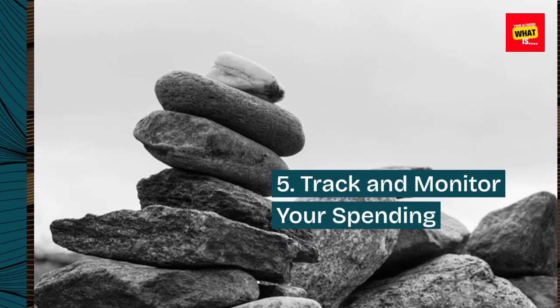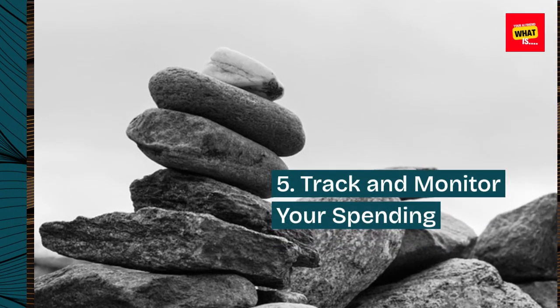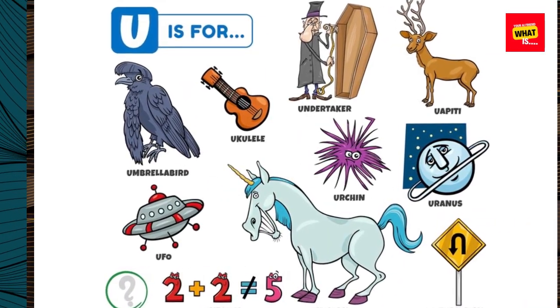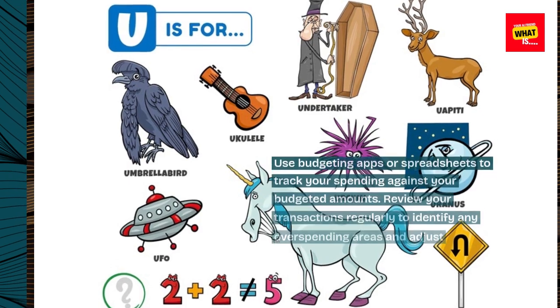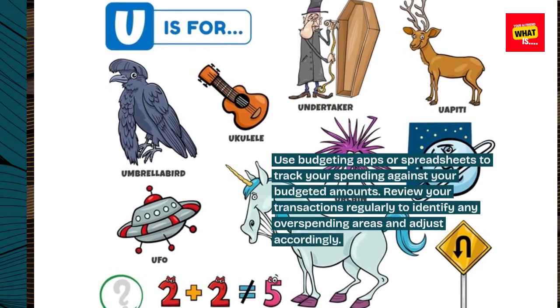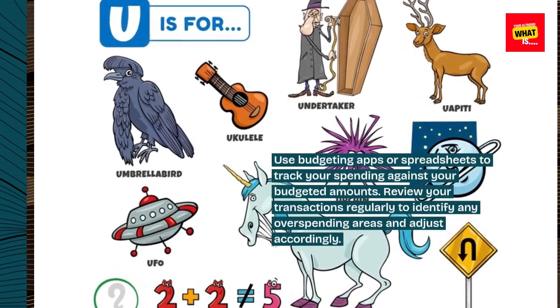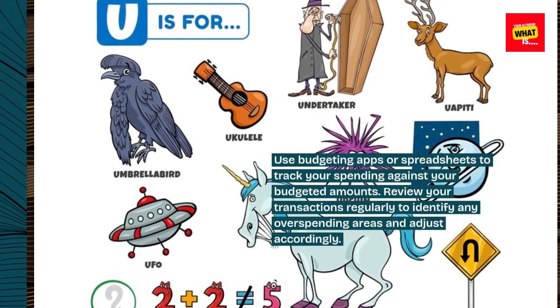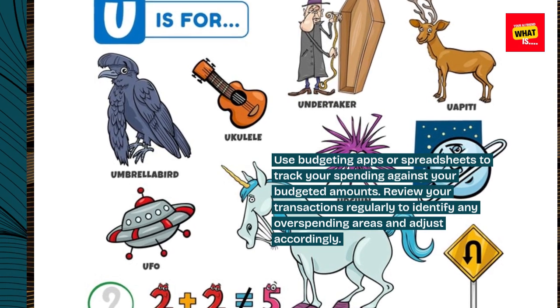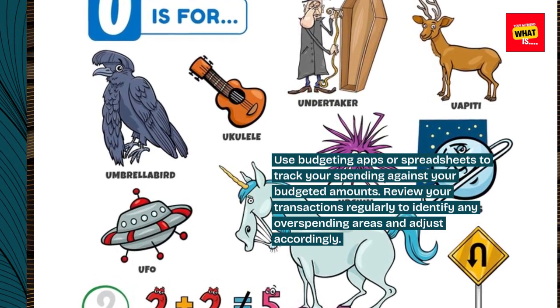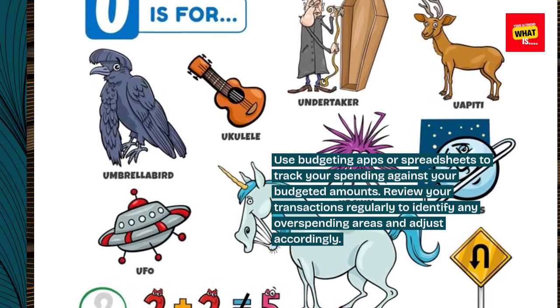5. Track and monitor your spending. Use budgeting apps or spreadsheets to track your spending against your budgeted amounts. Review your transactions regularly to identify any overspending areas and adjust accordingly.